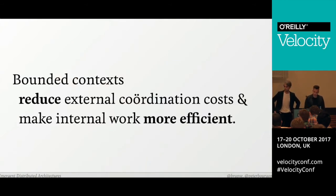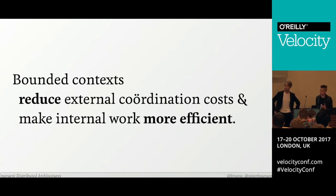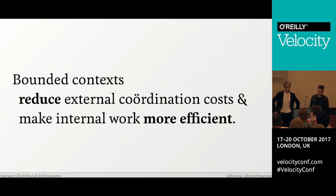Bounded contexts emerge naturally and are a good way to help a team focus — a way for a team to define themselves and the work that they do. Like a cell membrane, they promote cooperation and comprehension within the system through two main mechanisms: first, they reduce coordination costs by clearly defining a surface area of interaction, making interfaces more clear; second, they make internal work more efficient by giving team members a shared and closed vocabulary. Whether or not you do it explicitly, bounded contexts are bound to form — any group of people working closely together will naturally establish their own language and conventions.